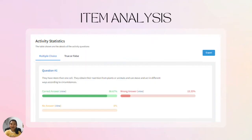The activity statistics feature helps teachers conduct item analysis efficiently. It shows the distribution of answers for each question. Such data can be used to compute the difficulty index and discrimination index of each item. In this regard, teachers can assess and improve the reliability of their activities.